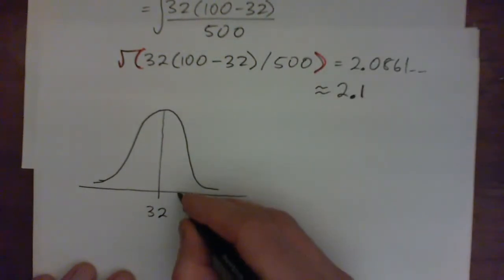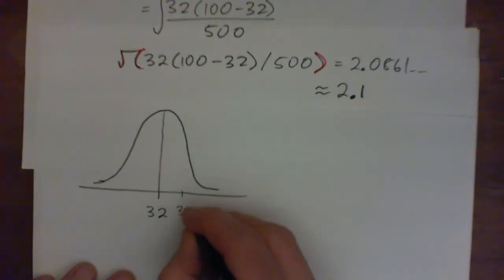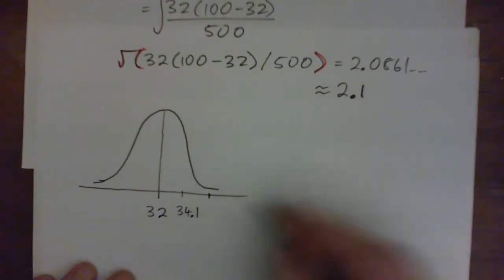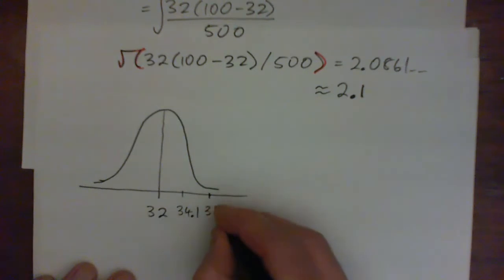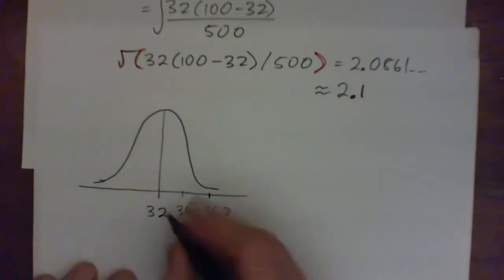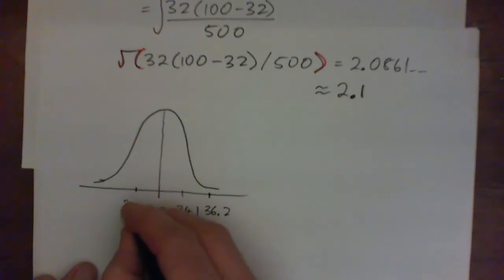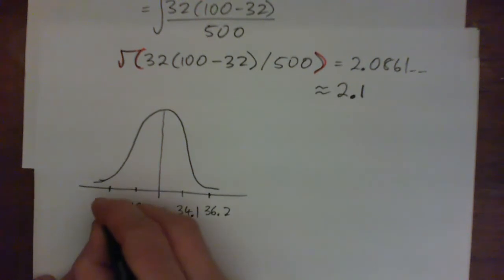Just draw a little bell curve like that. And in the middle, you've got your mean of 32. And one standard deviation up would be 34.1, and then two standard deviations would be 36.2. And then you can go back if you want. This is going to be like 29.9, and if I go down to, it's 27.8.